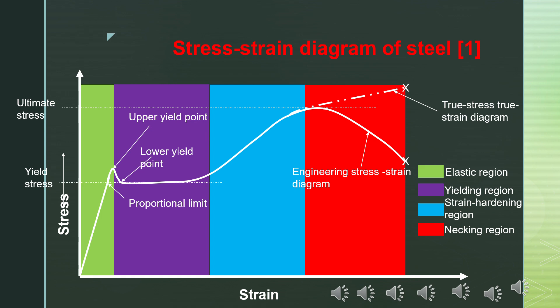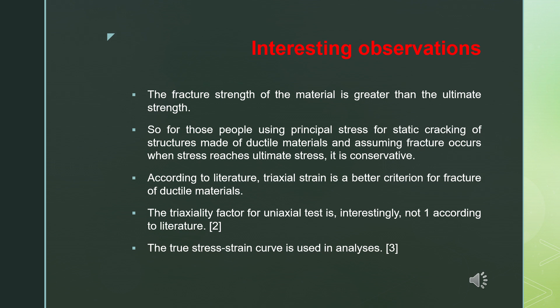The fracture strength of the material is actually greater than the ultimate stress. So if you are using ultimate stress to predict rupture of ductile materials, it is actually conservative. A more optimized criterion according to the literature is the triaxial strain. Interestingly, for a uniaxial tensile test, the triaxiality factor is not one according to the literature.